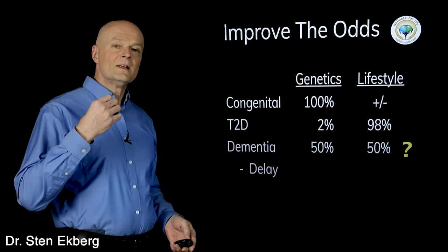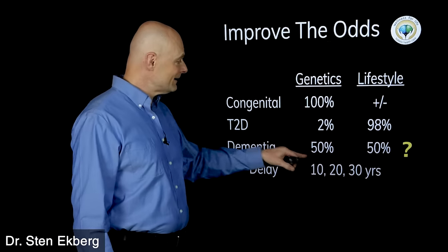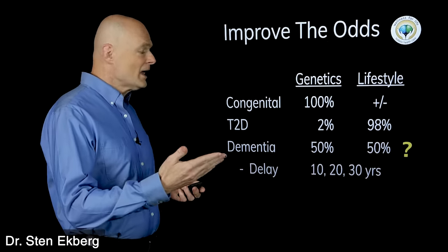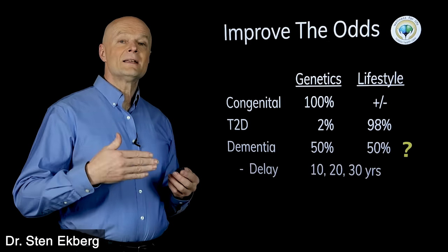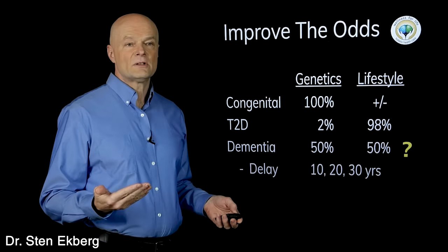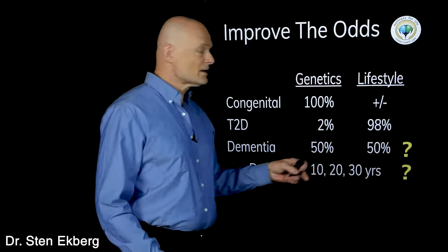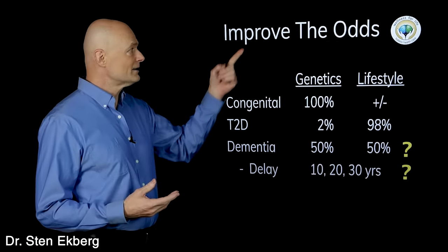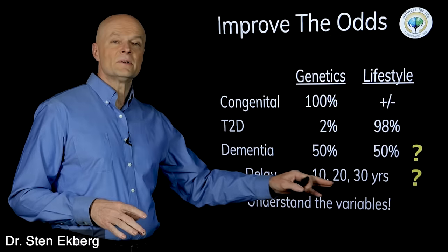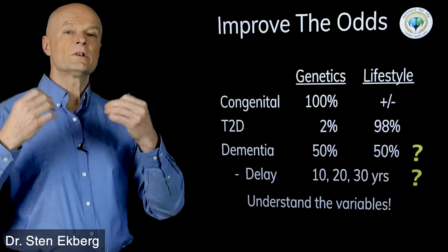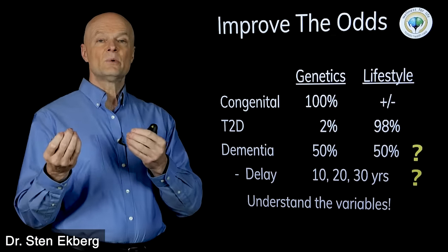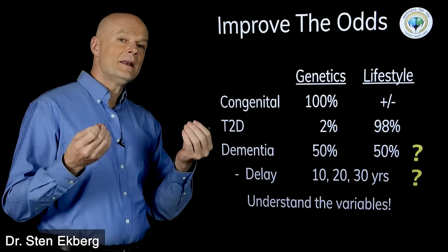What we're hoping for is to create a delay — maybe 10, 20, or 30 years — and hopefully you get to the end of life having delayed it long enough that you never actually get it. We don't know for certain; all we're trying to do is improve the odds. If we understand the variables and how the brain works and what it needs, we can figure out what speeds up degeneration, what slows it down, and find ways of influencing and improving those odds.